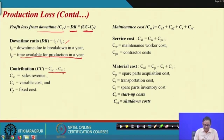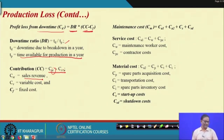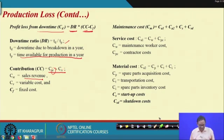Contribution (C_SCC) equals sales revenue (S_R) minus variable cost (C_B), and F_C is the fixed cost. You should be able to quantify this from your organization's point of view for the system for which you are interested in finding the production loss.